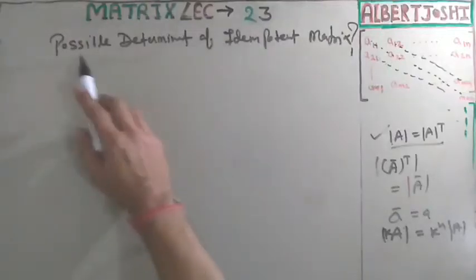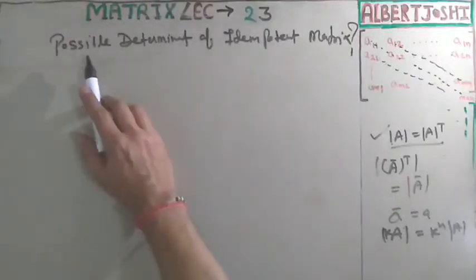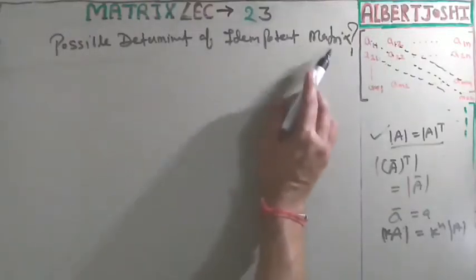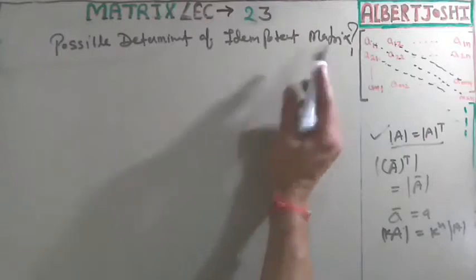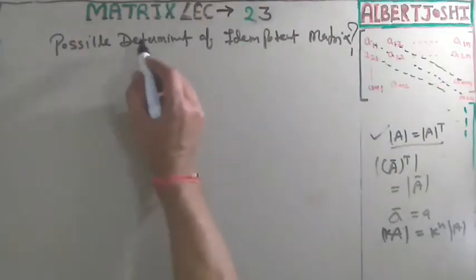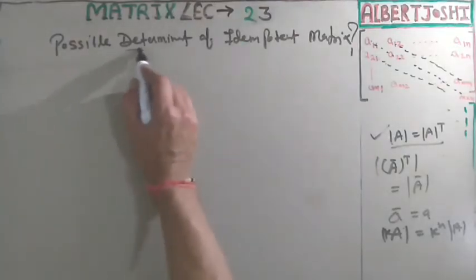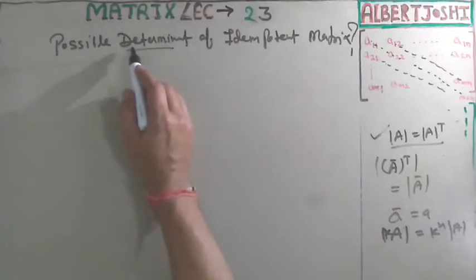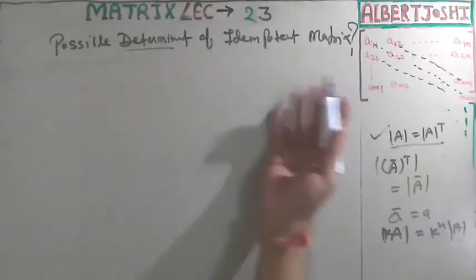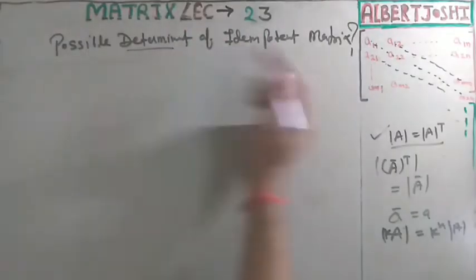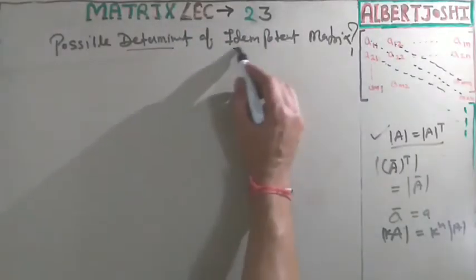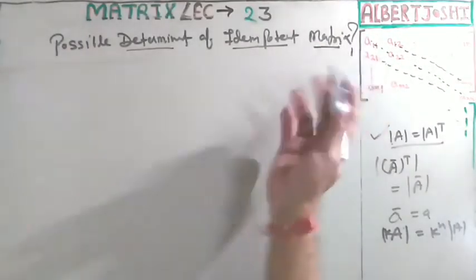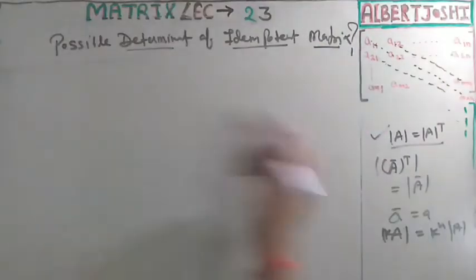This is lecture number 23. Today we are talking about the possible determinant of an idempotent matrix. For the definition of determinant, properties of determinant, definition of idempotent, and definition of matrix, please go to the previous lecture.